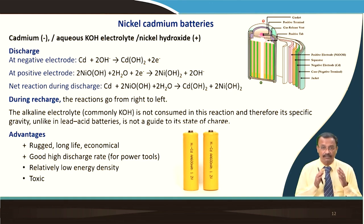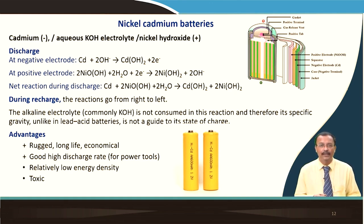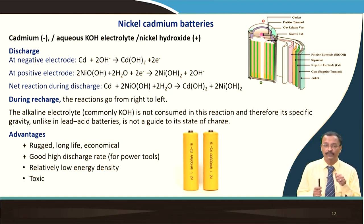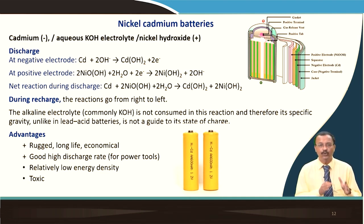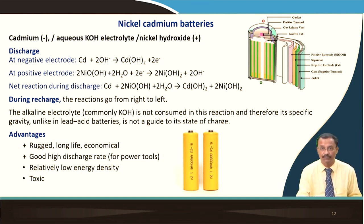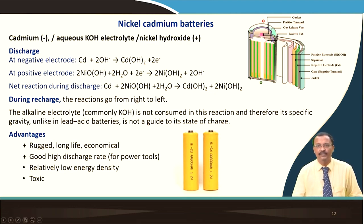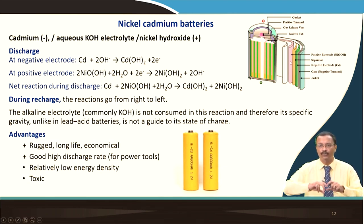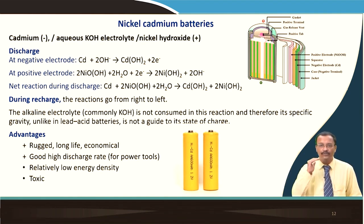Advantages of nickel cadmium: it is rugged, has long life, is economical, and has good high discharge rate — which is why it is used for power tools. However, it has relatively low energy density and is toxic due to cadmium. The cylindrical cell is constructed by rolling the anode, separator, and cathode together and packing them inside a cylindrical can.